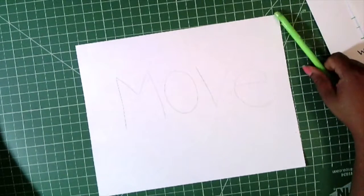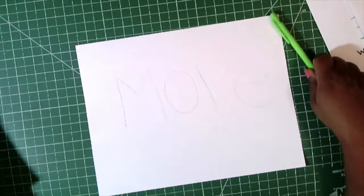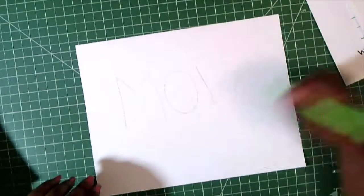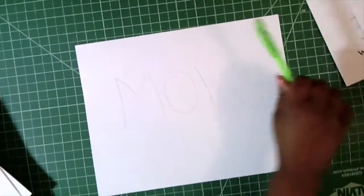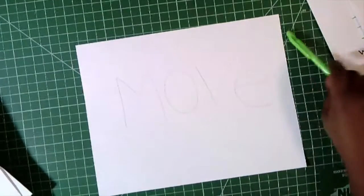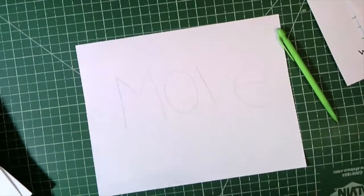After I have written my word move, I can go back with my pencil and go around each letter or I can skip ahead to a marker. I'm going to grab my black marker and skip ahead so that it's easy for you to see what I'm doing.